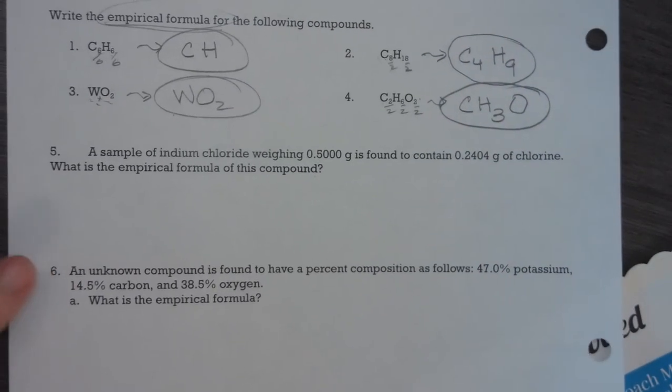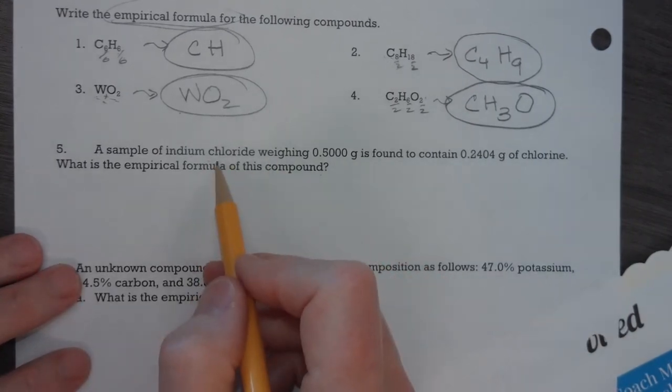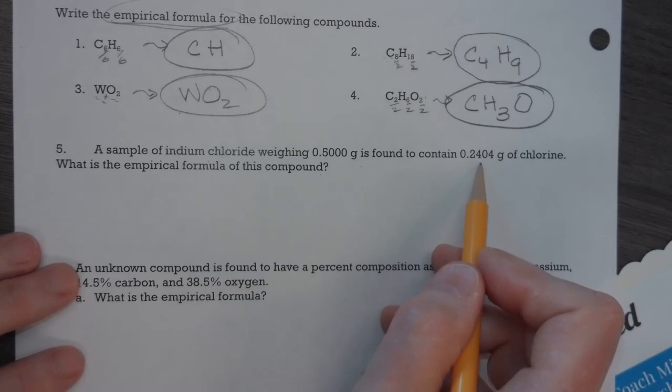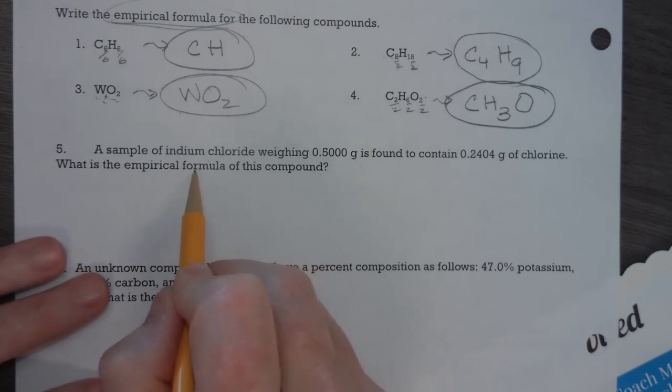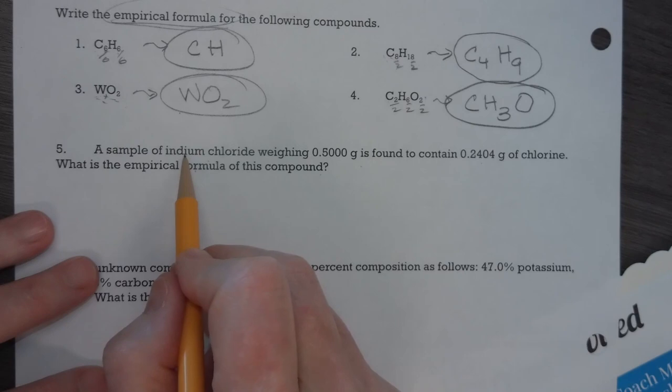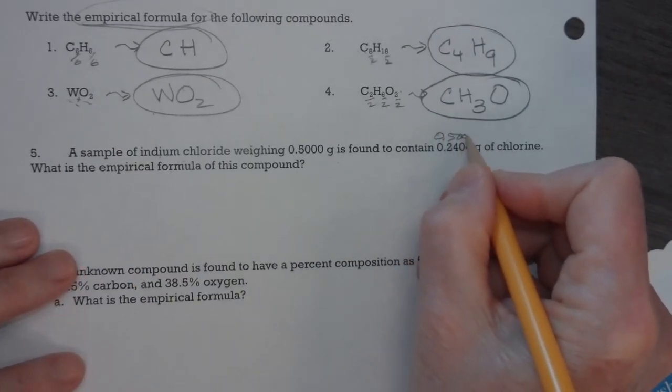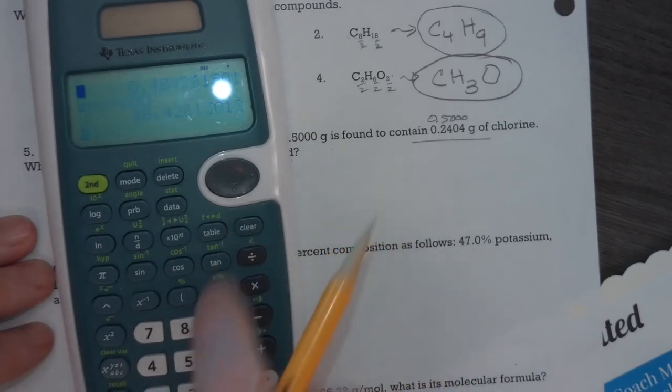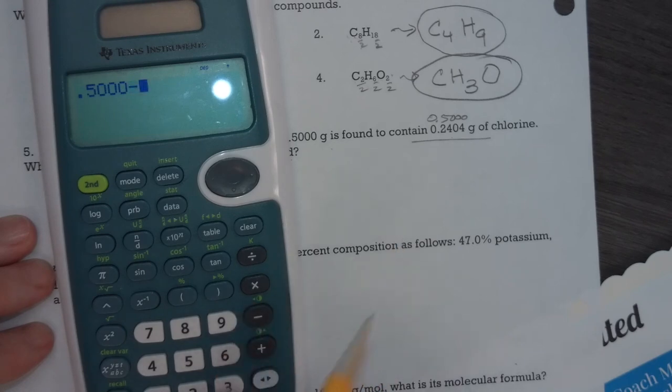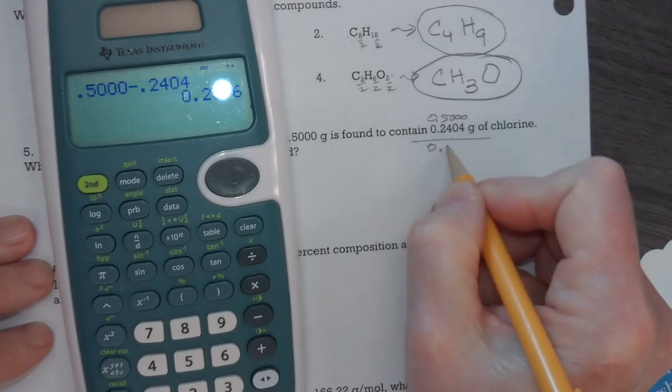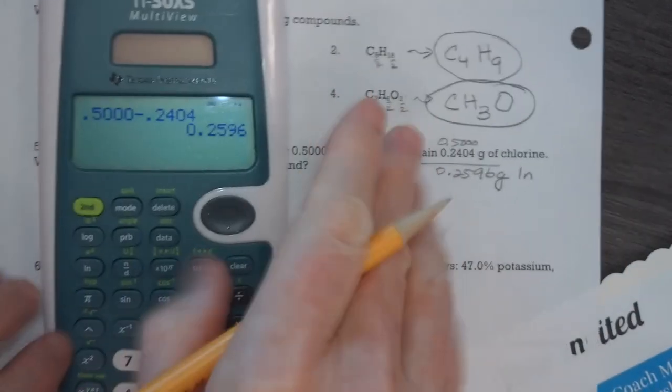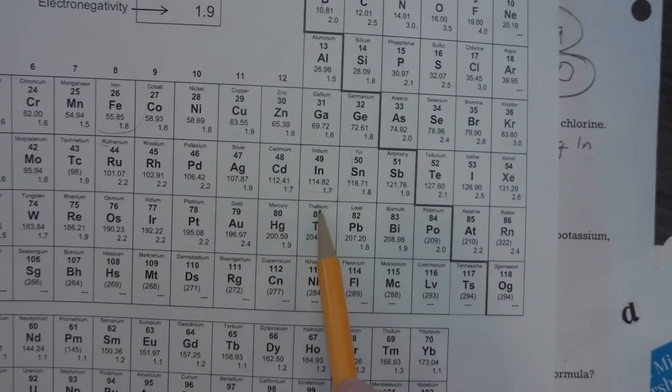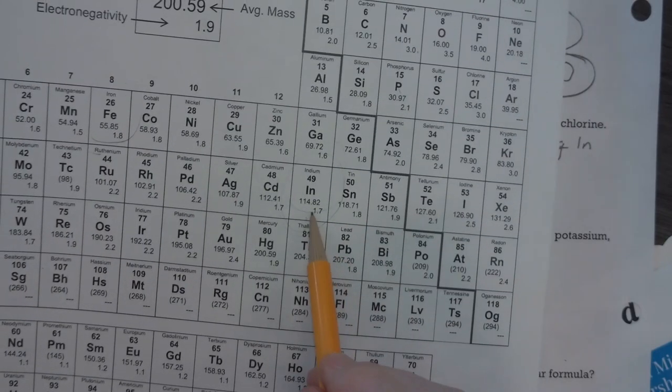All right, so here we have a sample of indium chloride that weighs 0.500 grams, and it contains 0.2404 grams of chlorine. So what is the empirical formula? Well, first of all, to know how much indium it contains, I have to subtract. So 0.500 minus 0.2404. I know that I have 0.2596 grams of indium. And so indium isn't one we've talked a lot about. It is element number 49. It has a molar mass of 114.82.